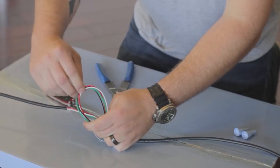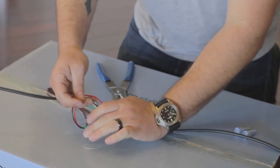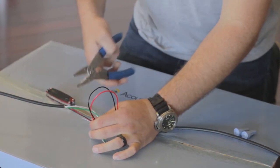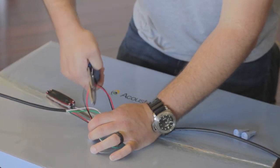We will use the red positive and black negative wires for the right channel, and the white positive and green negative wires for the left channel. Start by cutting the red and black wires in the middle of the loop.